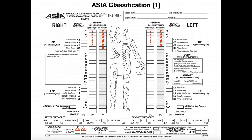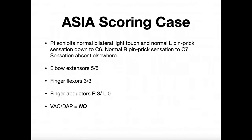When you're doing this assessment, you score sensation as 2, 1, or 0. A score of 2 means the sensation is normal — the patient feels it as normal. A score of 1 indicates that the sensation is abnormal, irregular, or diminished in some way. And 0 means it's absent. So let's take a look at the example and fill in the sensation parts.